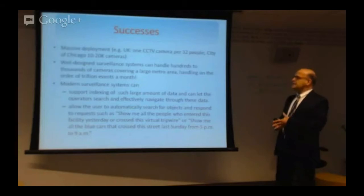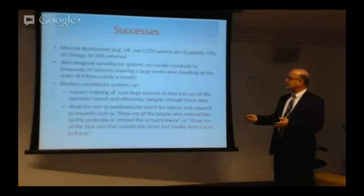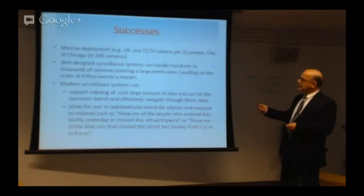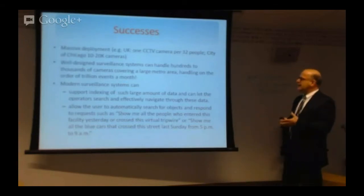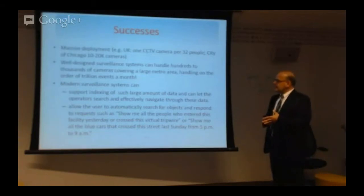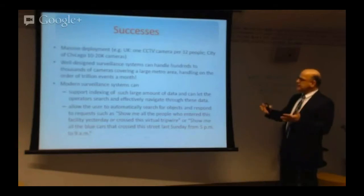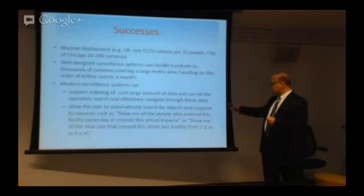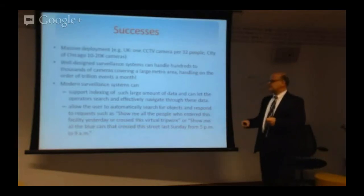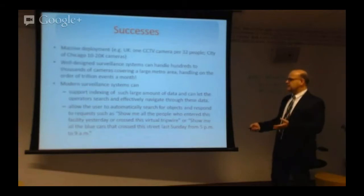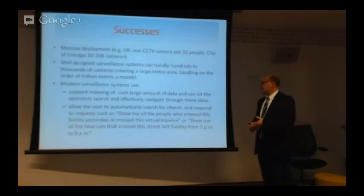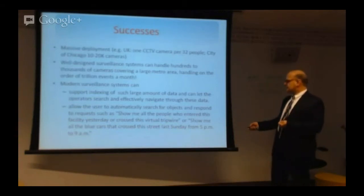There are a number of success stories, and one might argue that the massive deployment of cameras is part of the success story. One statistic says that in the UK there is one camera per 30 people, and a city can have 10,000 to 20,000 cameras, as was mentioned, handling a trillion events per month. The state of the art can index data and also answer queries such as: show me all the people who entered this facility yesterday, or the people that crossed a particular virtual tripwire, or show the blue cars that crossed this street last Sunday from 5 PM to 9 PM.